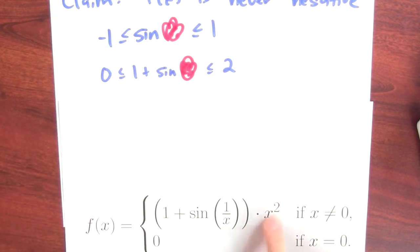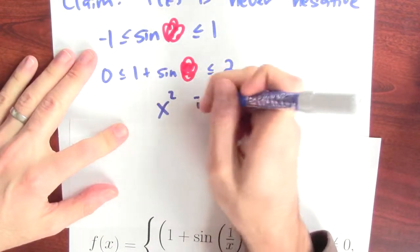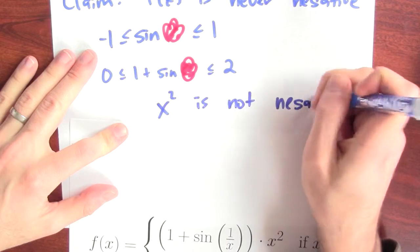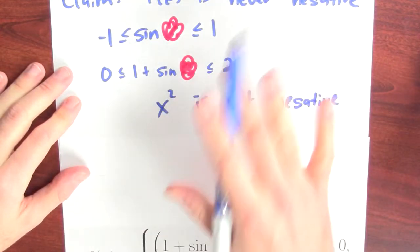Now, I'm multiplying it by x squared. What do I know about x squared? Well, x squared is not negative. Could be 0, could be positive, but no matter what x is, x squared is not negative.